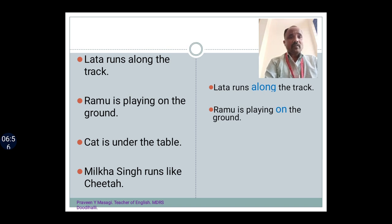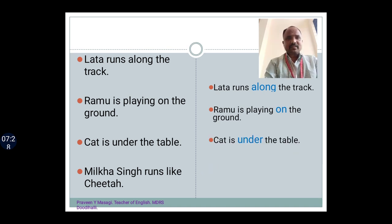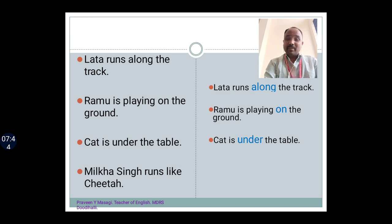Now let's look at the next sentence: Ramu is playing on the ground. Here, 'on' is showing the relationship between Ramu and ground. In the same fashion, the next sentence: Cat is under the table. Whenever we talk about a cat, we don't necessarily have to remember the table — wherever the cat goes, it doesn't carry the table. But here in the sentence, 'under' shows the relationship — the cat is under the table.